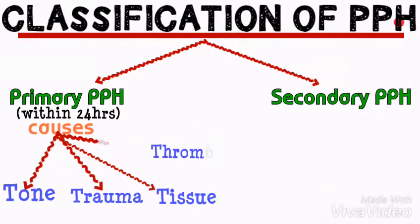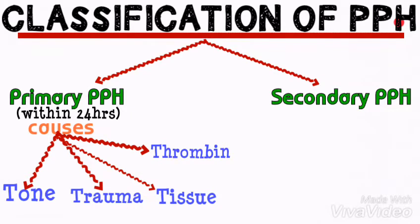The fourth T stands for thrombin or coagulopathy. This is due to a bleeding disorder which occurs due to clotting failure, anemia, or lift.